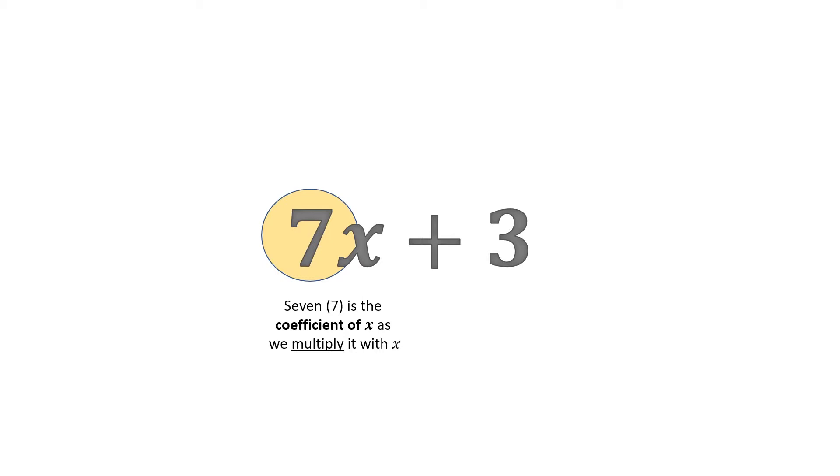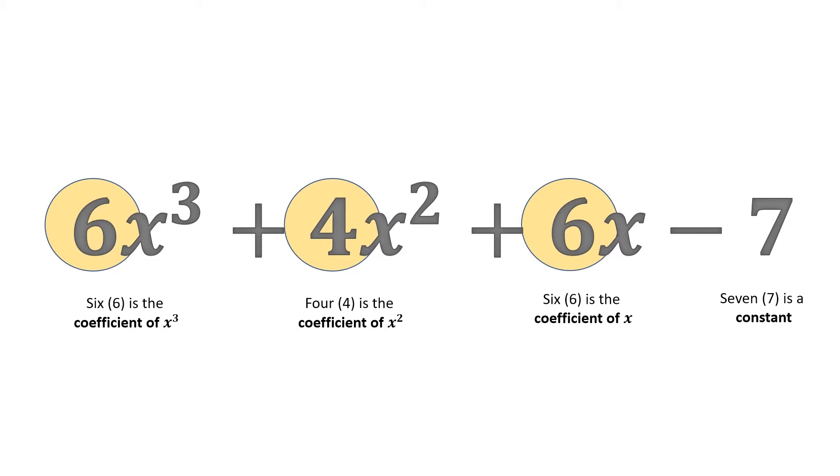In the case of a larger or multi-term statement, such as 6x to the power of 3 plus 4x to the power of 2 plus 6x minus 7, 6 is the coefficient of x to the power of 3, and 4 is the coefficient of x to the power of 2, and 6 is the coefficient of x, while 7 is still only a constant.